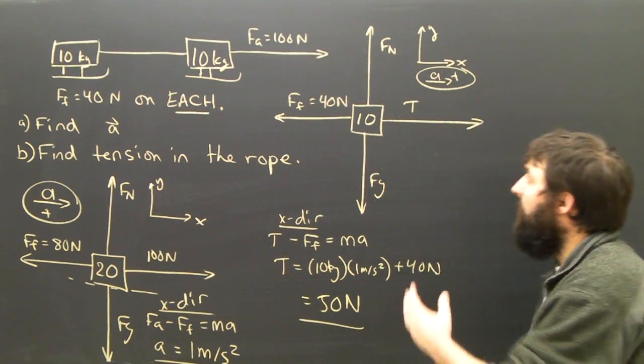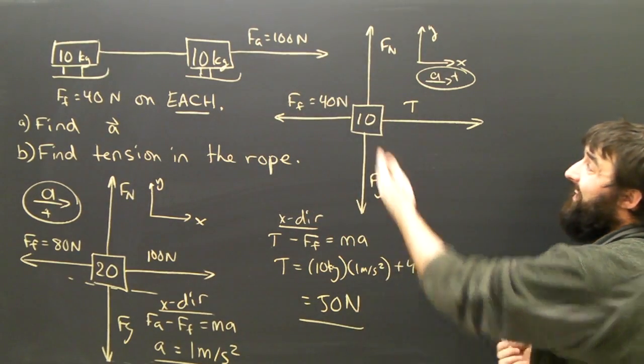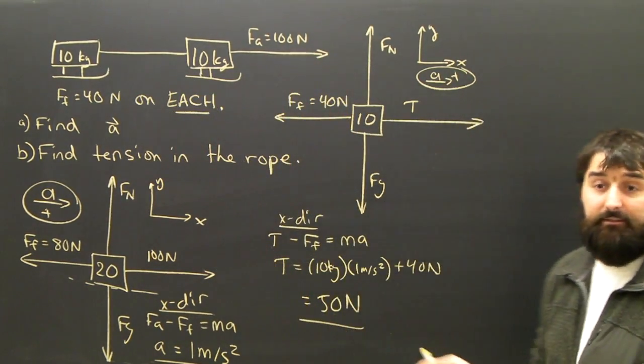So the force that's required in the rope to pull the second sled is 50 newtons, which is half of the 100 newtons which is pulling the whole train, which hopefully makes sense.